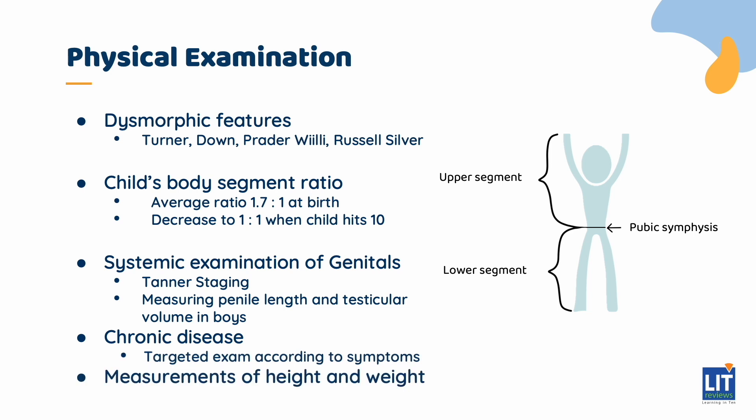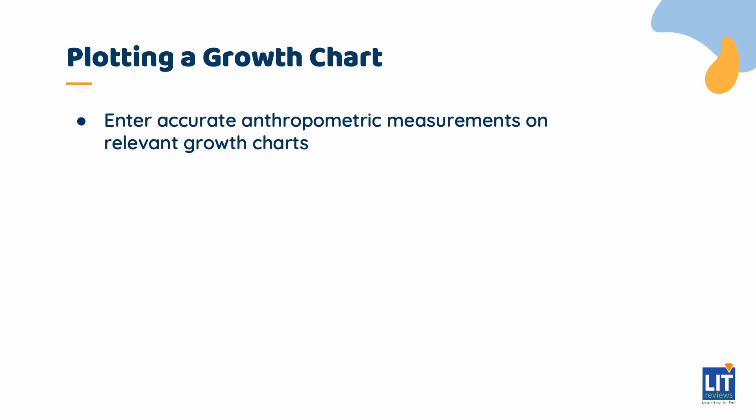Assessing body proportions and obtaining accurate height measurements is pivotal, as this can point to a skeletal dysplasia. Several measurements over time will give you an indication of height velocity, which can also be plotted against age. Once you have obtained accurate anthropometric measurements, you need to enter the details on the relevant growth charts, which must include height for age, weight for age, height velocity for age charts, and head circumference for age in a younger child.